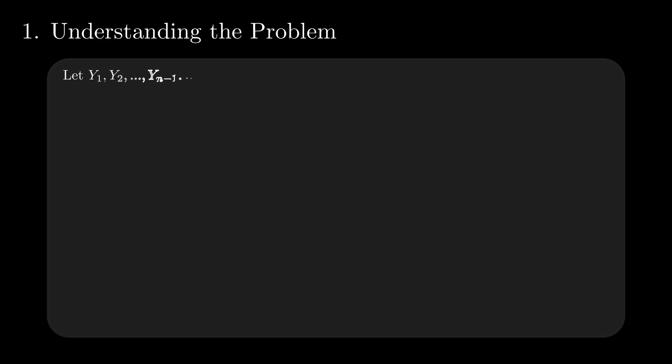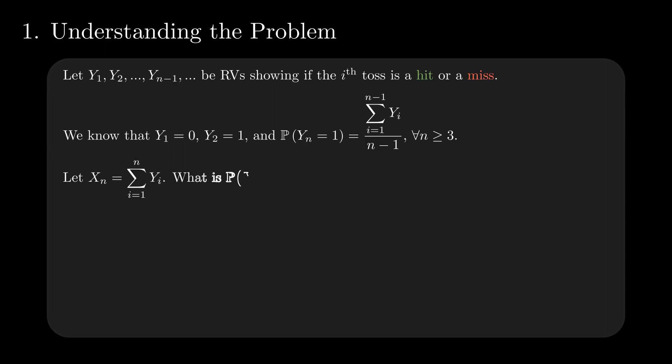Let's name some of the variables we encounter in this problem. Let Y_i be random variables showing if the i-th toss is a hit or a miss. The probability that Y_n equals 1 is the average of Y up until n-1. We denote by X the number of hits in n tries, which is the sum of Y's, and we are searching for the probability that X_300 equals 298.